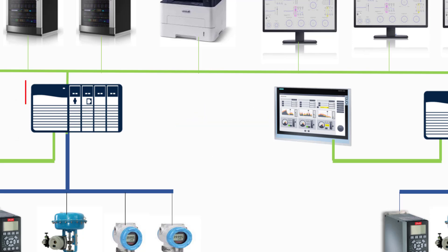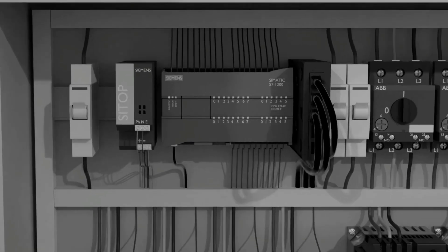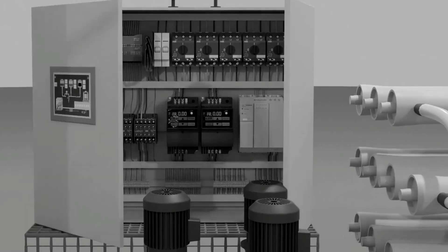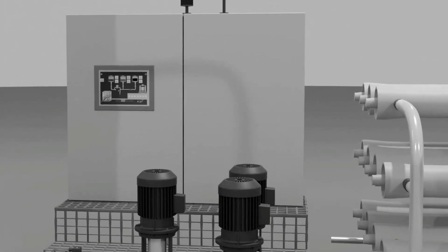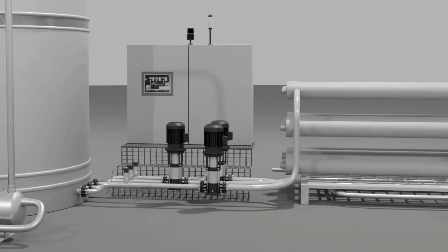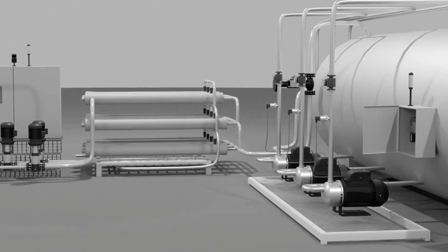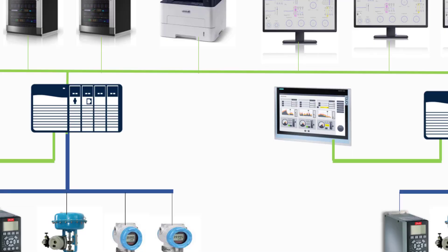Similarly, in a process, if the PLC decides that something needs to be adjusted, it sends commands to motors or valves to make those changes. So, just like how an autopilot guides a car safely to its destination, PLCs ensure that processes run smoothly and efficiently by monitoring and controlling various parameters based on the information provided by instruments.